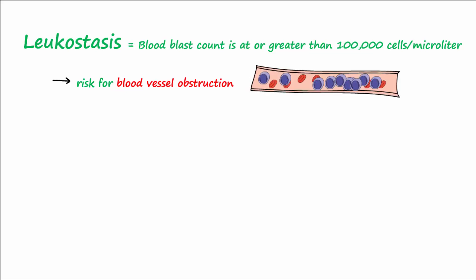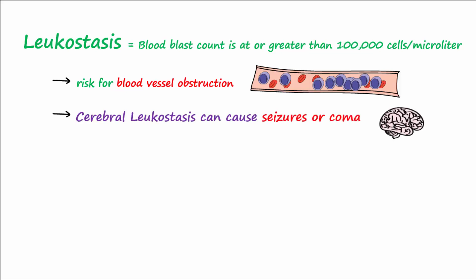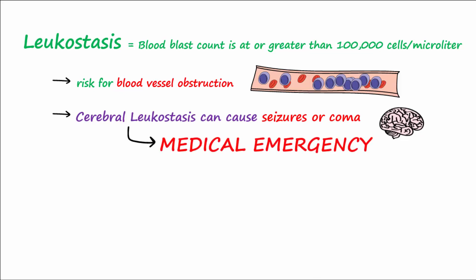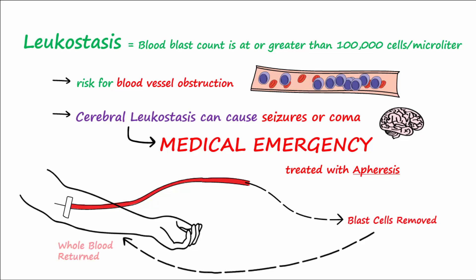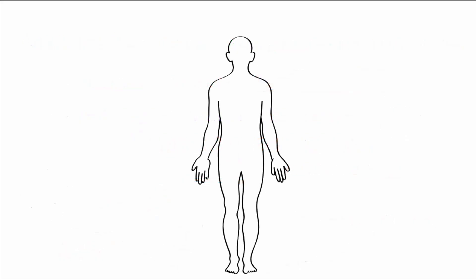Leukostasis may also occur in the brain, referred to as cerebral leukostasis, which may lead to seizures or coma. This is why leukostasis is a medical emergency and is treated with apheresis. Apheresis is a procedure where blood is drawn from the body and plasma is separated out to remove factors like antibodies — but in this case, blast cells — from the blood.